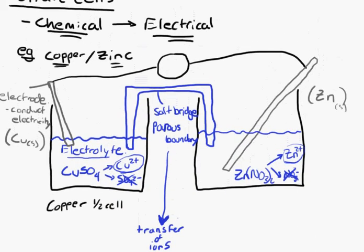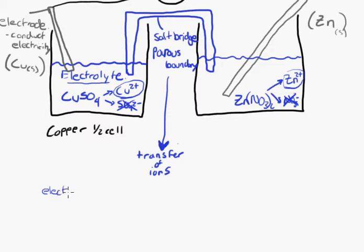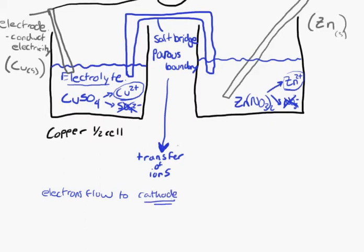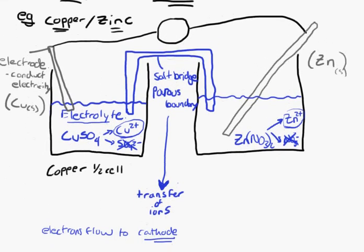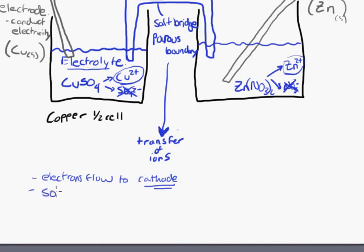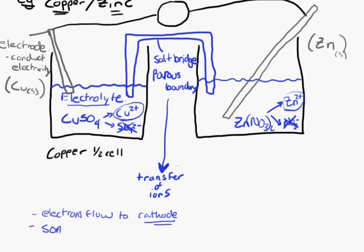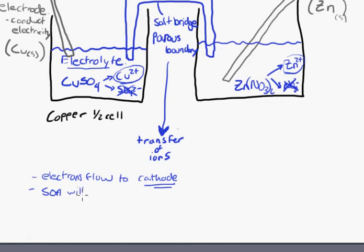Electrons flow towards one end of this cell — you need to memorize that electrons will always flow towards the cathode. The strongest oxidizing agent (SOA) will always be your cathode. You look on your table of oxidizing and reducing agents to figure out which one is the strongest. The strongest oxidizing agent will be the cathode, and electrons will always flow there.